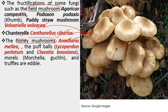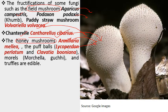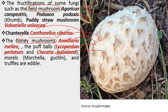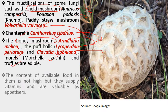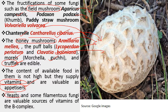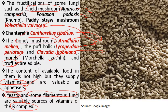Other edible fungi include Puffballs (Lycoperdon perlatum), Clavaria (Clavicorona buniana), Morchella (Gucci), and Truffles — which are the costliest mushrooms. The content of available food in them is not high but they supply vitamins and are valuable as appetizers. They are also rich in minerals. Some fungi like yeast and filamentous fungi are a valuable source of B complex vitamins. Yeast, specifically Endomyces, is rich in B complex.